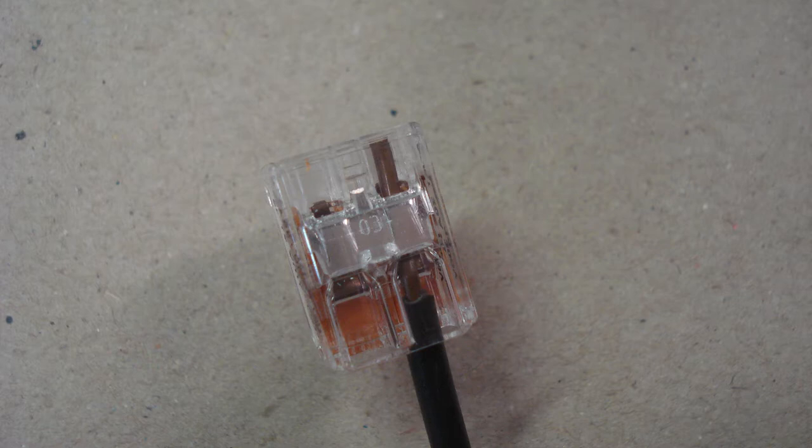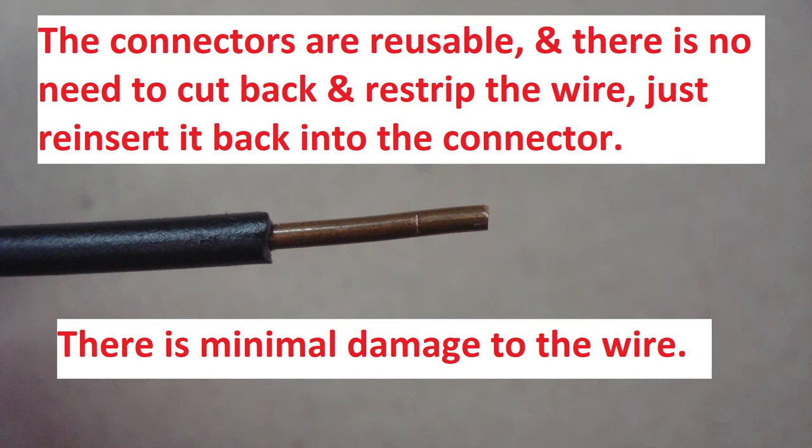You can see if the wire has been inserted correctly. It's not listed on the installation instructions. I did contact WAGO to verify that if a wire is removed from a connector, there's no need to cut the wire back and strip it before reinserting it into the connector again.